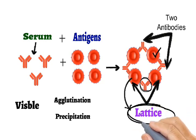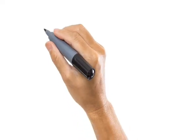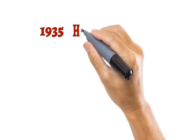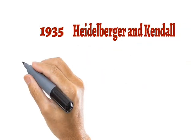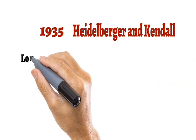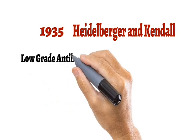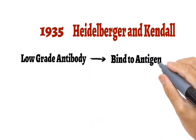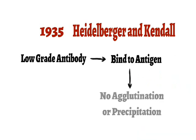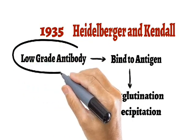Without this lattice pattern, antibodies cannot be detected. In 1935, two scientists, Heidelberger and Kendall, discovered a different kind of antibody which they called a low-grade antibody. These antibodies are able to bind their target antigen, but they are not able to either agglutinate or precipitate it, which is why they called it a low-grade antibody.